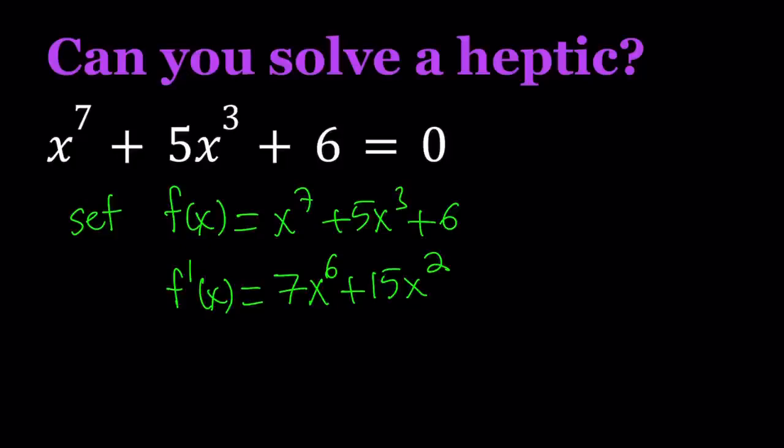Notice that because we started off with odd powers, when we differentiated, we got even powers, which makes sense. So this derivative is basically greater than or equal to 0 for all x values in the domain. And the domain is real numbers, of course.